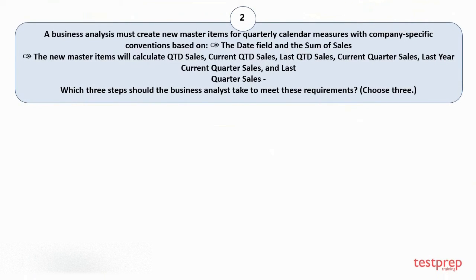Question number 2. A business analyst must create new master items for quarterly calendar measures, with company-specific conventions based on: 1. The date field and the sum of sales. 2. The new master items will calculate QTD sales, current QTD sales, last QTD sales, current quarter sales, last year current quarter sales, and last quarter sales. Which three steps should the business analyst take to meet these requirements? Choose three.